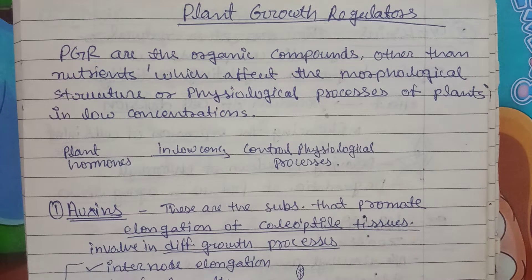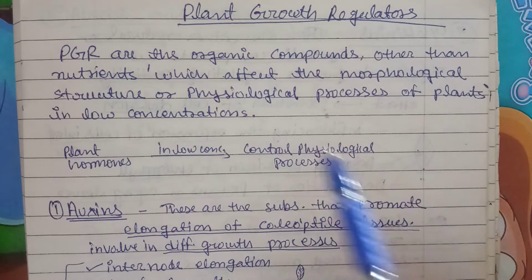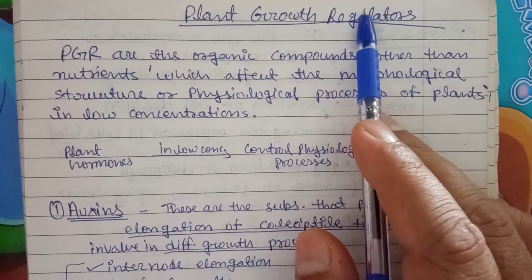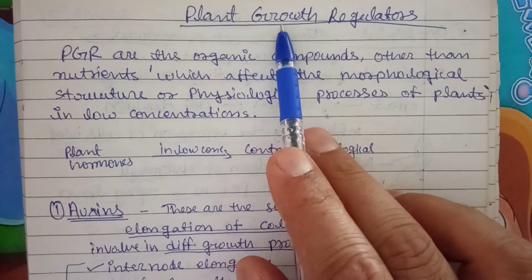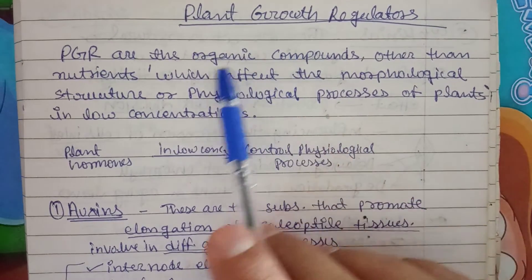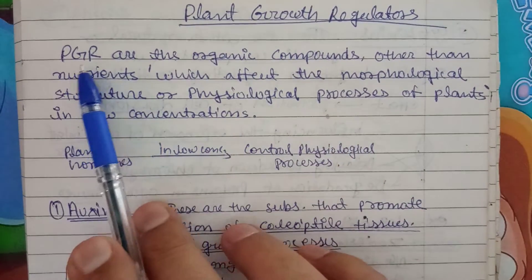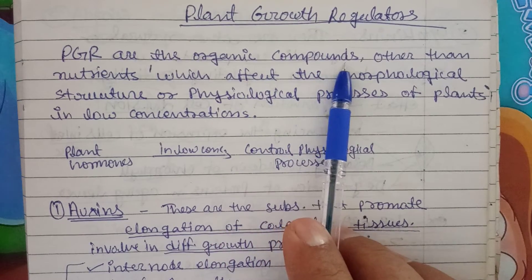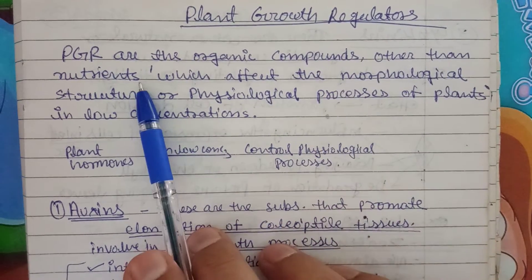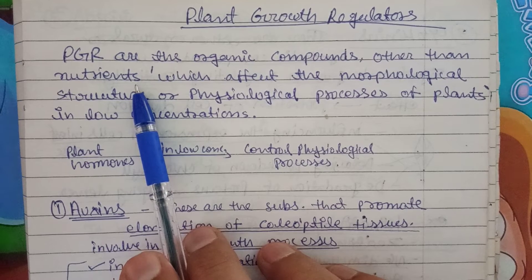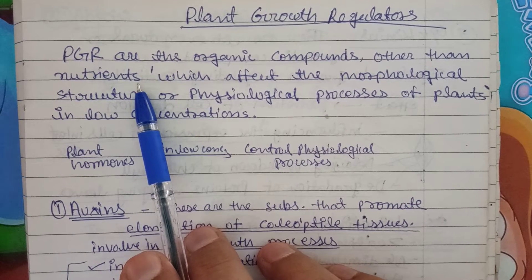Now we are going to discuss about the plant growth regulators. So when we talk about plant growth regulators, these are the regulators which will involve into the plant growth, which will help into the plant growth. So when we try to define it, plant growth regulators are the organic compounds, other than nutrients. These are not nutrients; these are other than nutrient organic compounds.